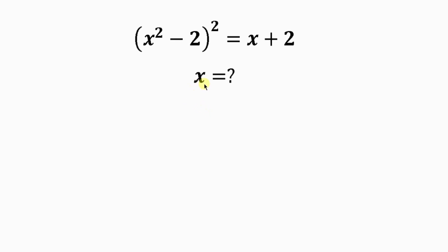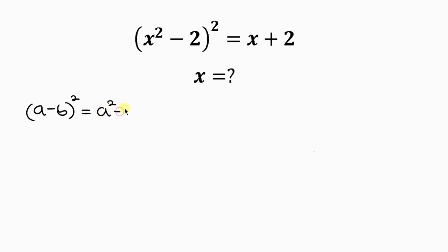This question asks us to find the values of x, given that (x² - 2)² is equal to x + 2. Notice that the left-hand side is of the form (a - b)², which has the special identity a² - 2ab + b².